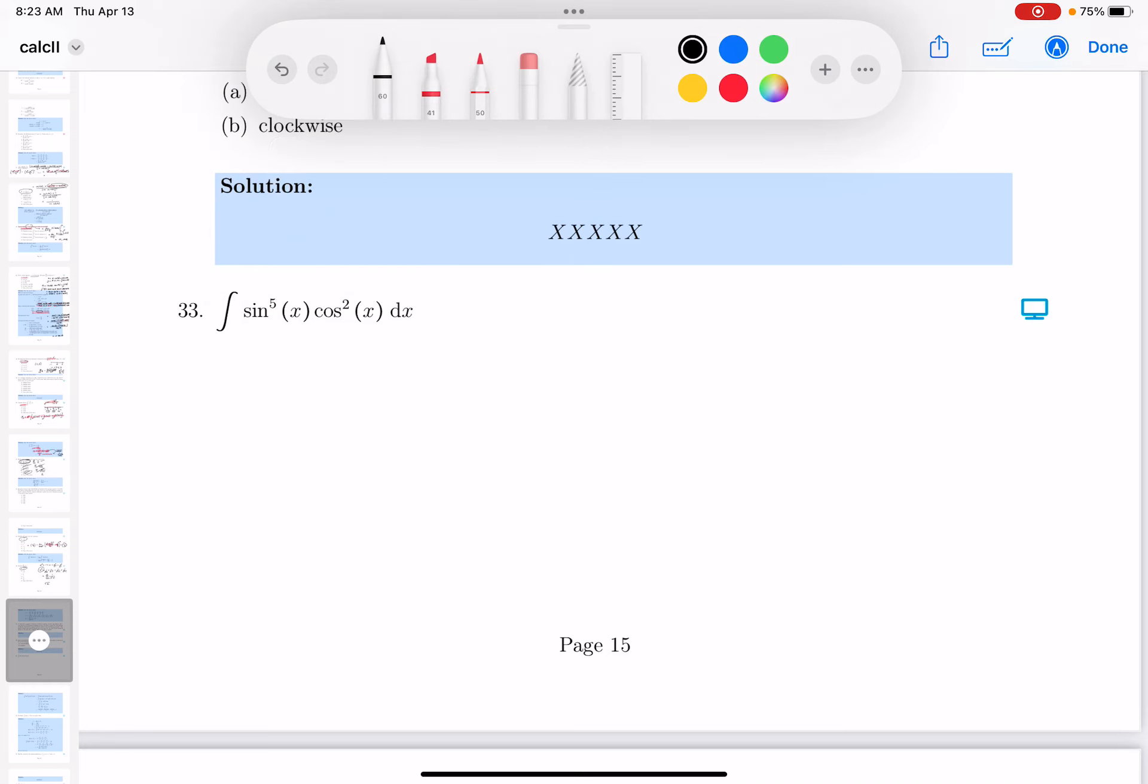Okay, 33. I'm going to look at it, and what I'm going to do is I'm going to borrow a sine from that sine 5. And you're going to get sine of x, and then you're going to get sine to the fourth power of x times cosine squared x.